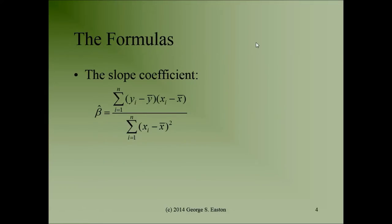In a typical statistics textbook's chapter on simple regression, you'll generally see a formula for the slope coefficient where in the numerator, you take each value of y, subtract the average of all y's, multiply by the corresponding value of x minus the average of all x's, then add them up for all observations. In the denominator, you go through each value of x, subtract the average of all x's, square that, and add it up going down through all observations. That's the standard formula for a regression coefficient.